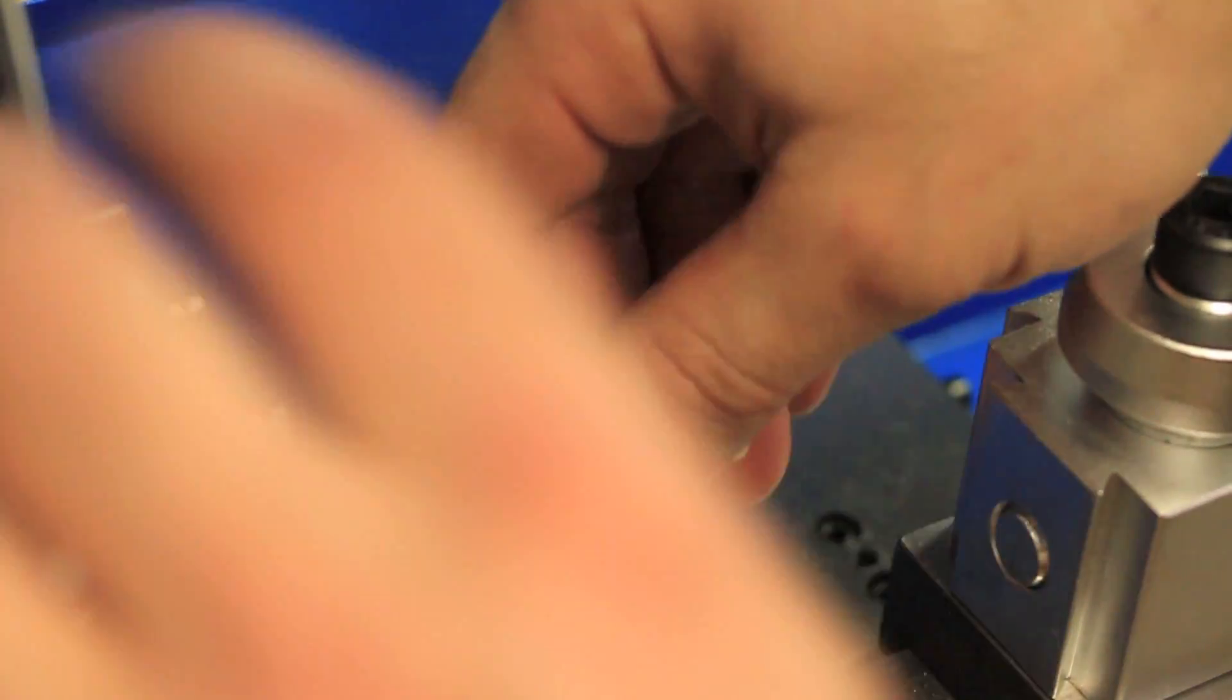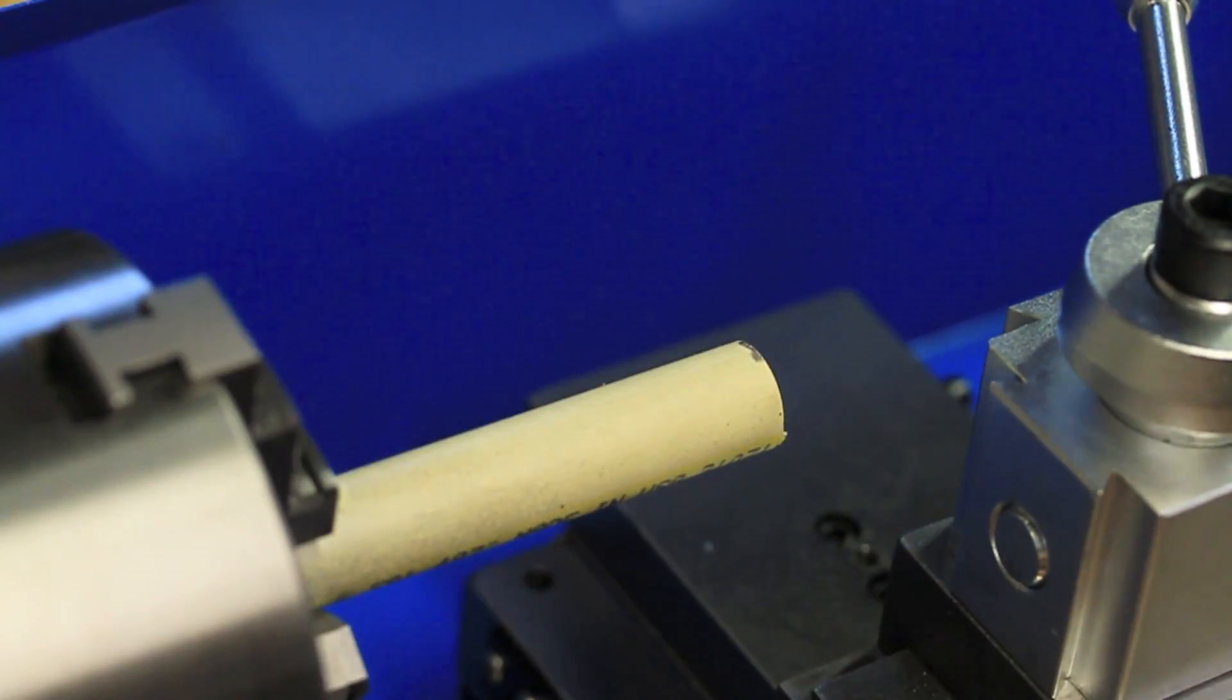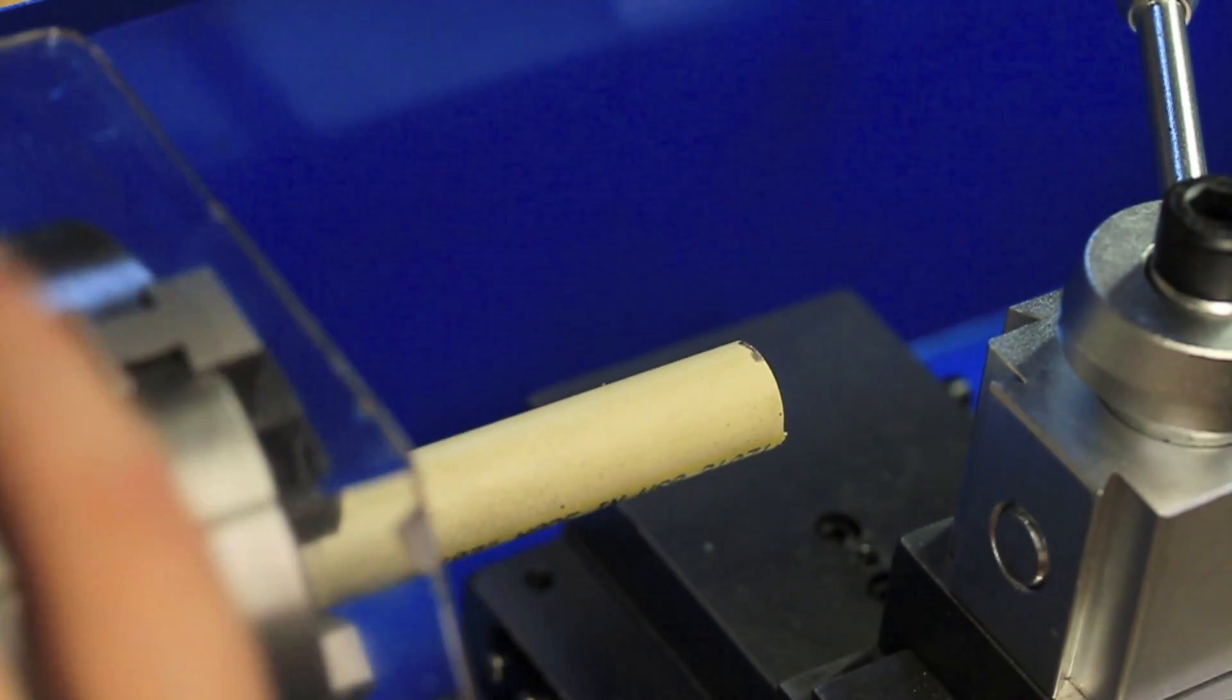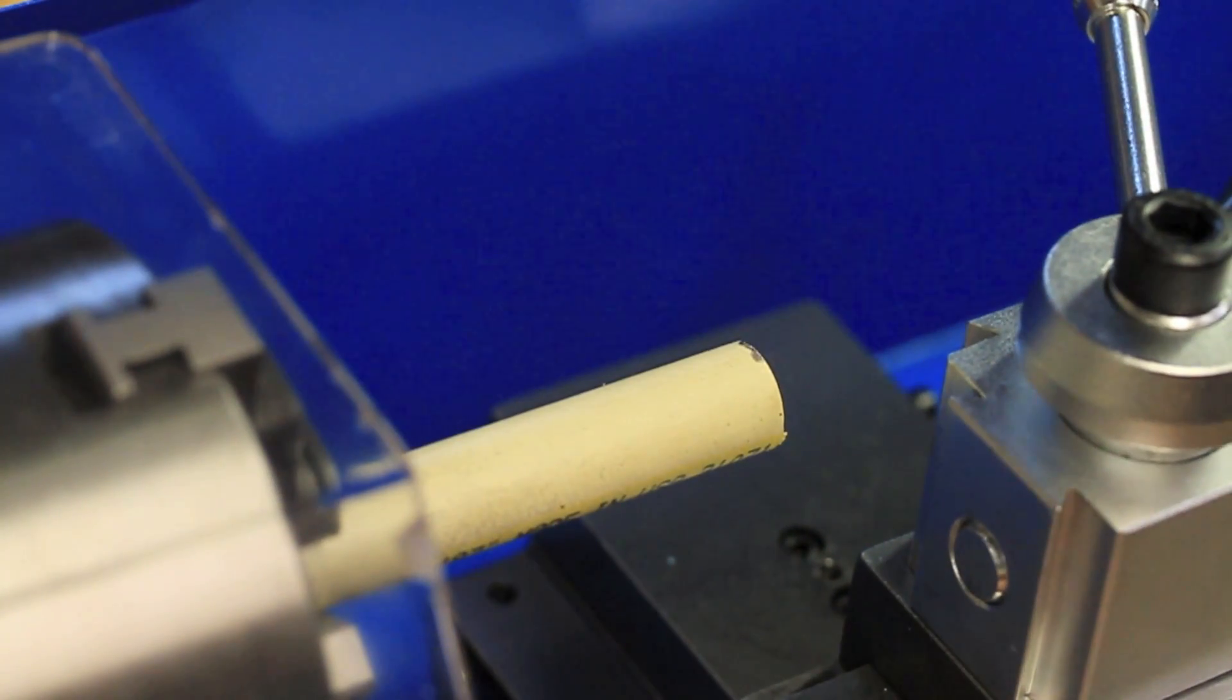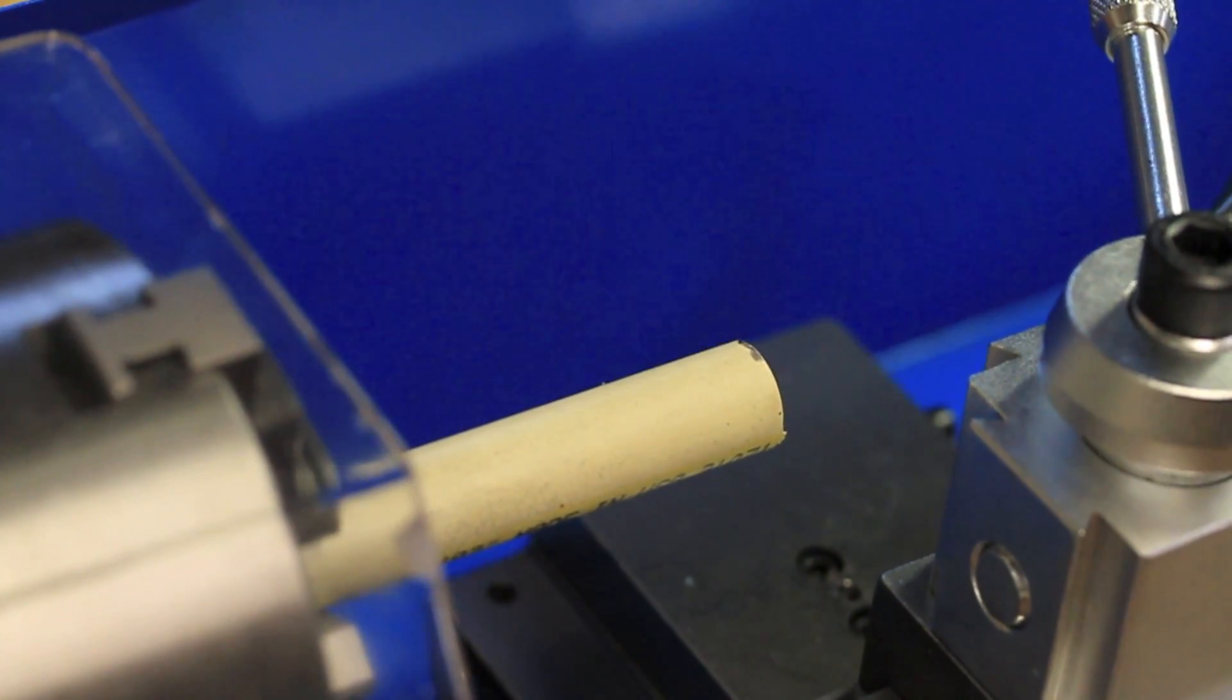Finally, with everything assembled, I decided to do a quick test run using a piece of PVC pipe. In case anything were to go wrong, I figured the PVC pipe would be most forgiving. And it's also relatively easy to turn on a lathe.